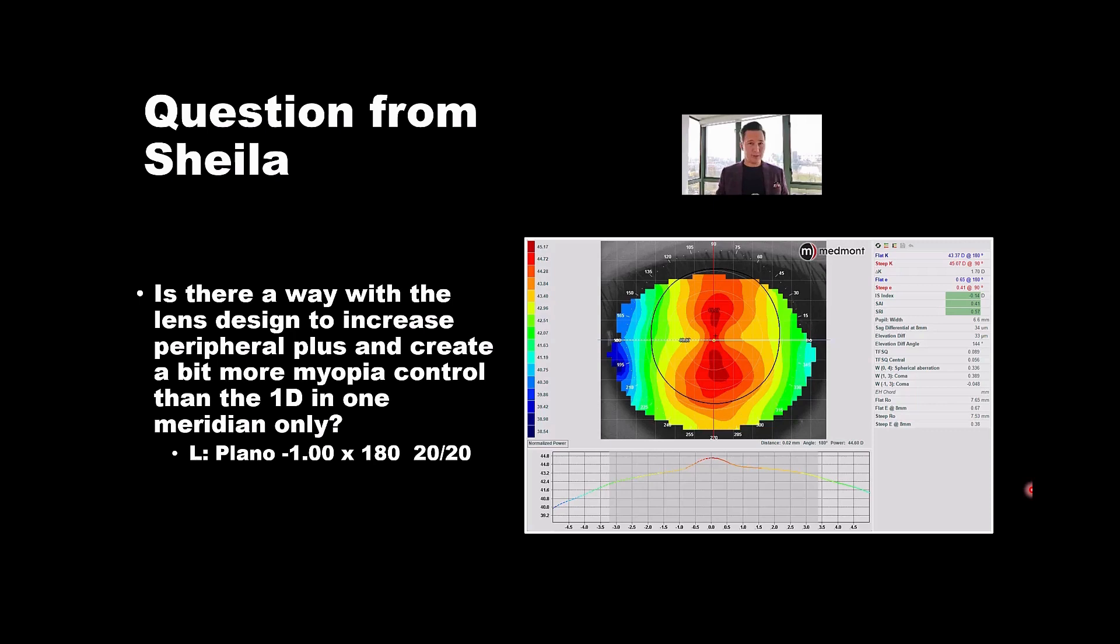So Sheila's getting exactly the right point. We need different hydraulic forces. How do we create those different forces? And that's with a dual zone toric. Toric in the landing, toric in the base curve.